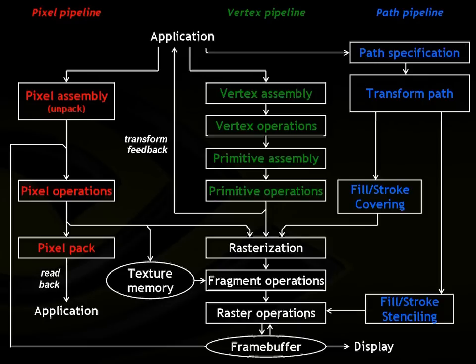Here's the pipeline. The red and green show the existing OpenGL pipeline. On the left is the pixel pipeline for specifying textures or draw pixel operations. In the middle is the vertex pipeline that transforms vertices, assembles them into triangles, and rasterizes them. On the right is the new pipeline introduced by NV path rendering, where you specify paths, transform paths, and perform stencil fill or stroke operations, followed by a covering operation that flows through rasterization with all fragment operations including blending and scissoring.